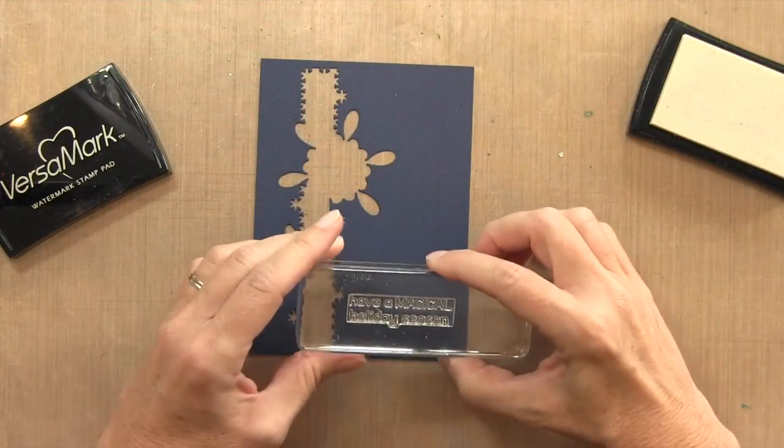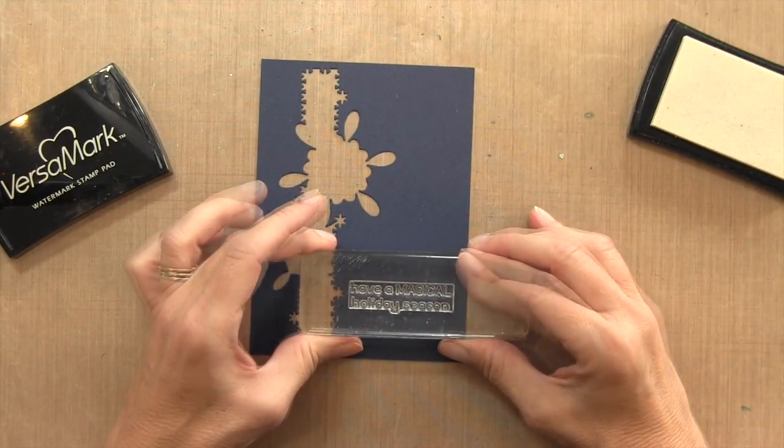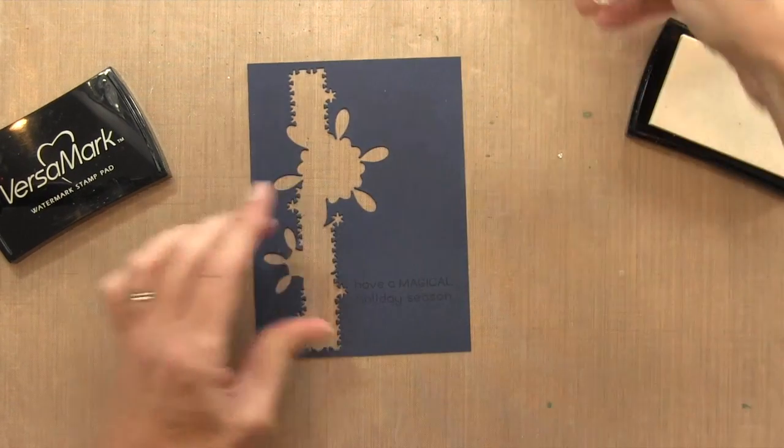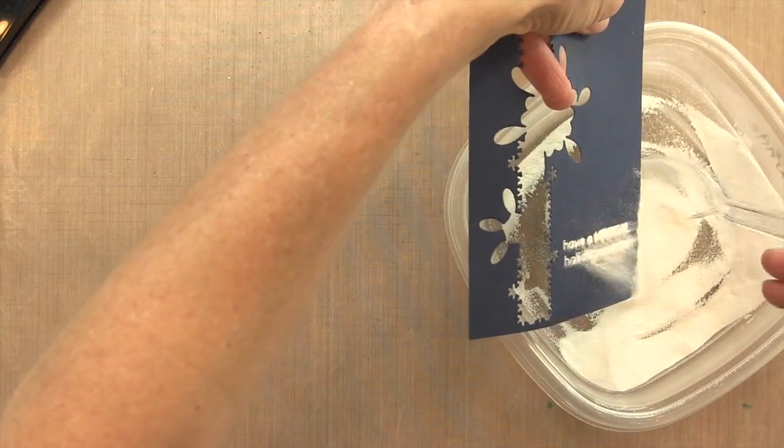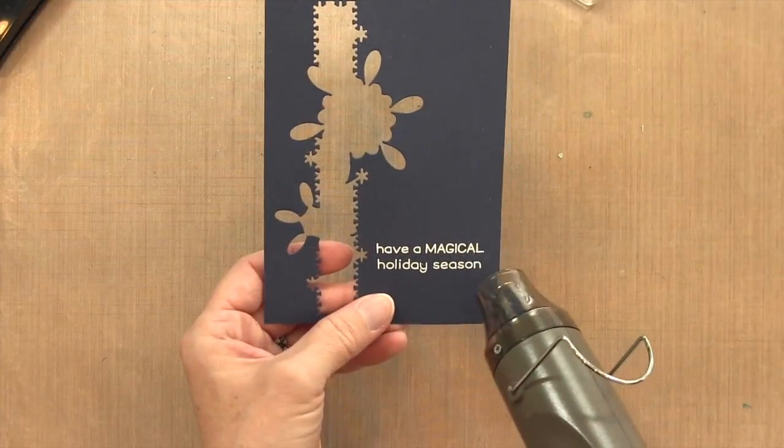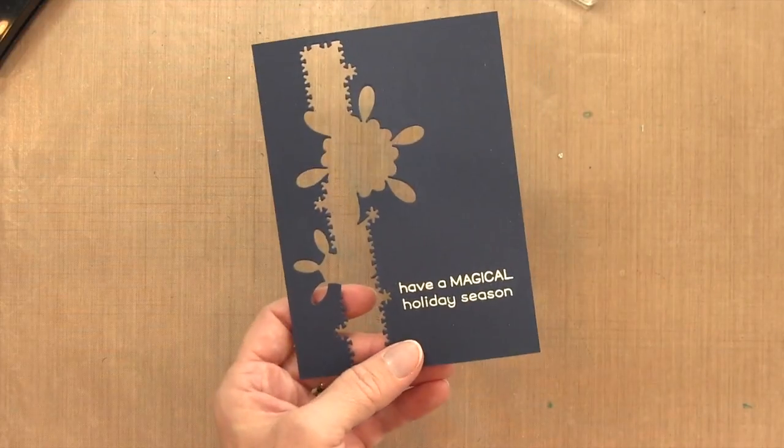Going back to that Night of Navy piece, I'm stamping my sentiment from the Lawn Fawn Merry Messages set in Versamark ink. I'll sprinkle it with white embossing powder, heat it to set it, then trim it at the top and bottom, keeping those die lines on the left side.